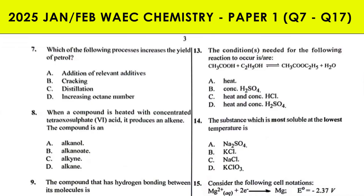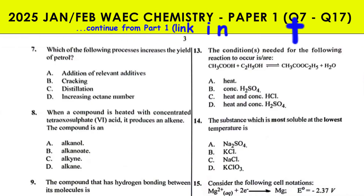Question 7. The wheel of the flame process increases the yield of petrol. Addition of relevant additives does not increase the yield of petrol — it only increases the quality of petrol.